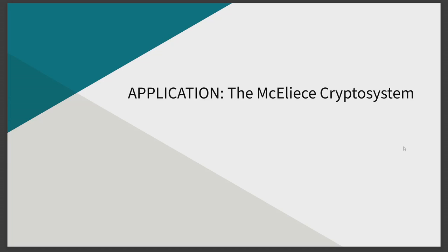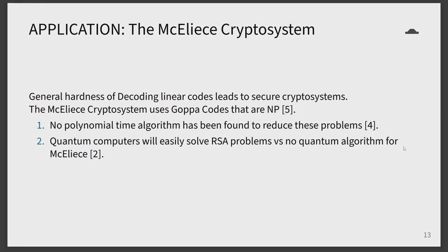I will quickly go over an application example of the hardness of decoding linear codes, the example being the McEliece cryptosystem. The security of the McEliece cryptosystem, which has been previously described, relies on there being no known decoding algorithm for a general linear code, despite there being an algorithm to solve general Goppa codes.